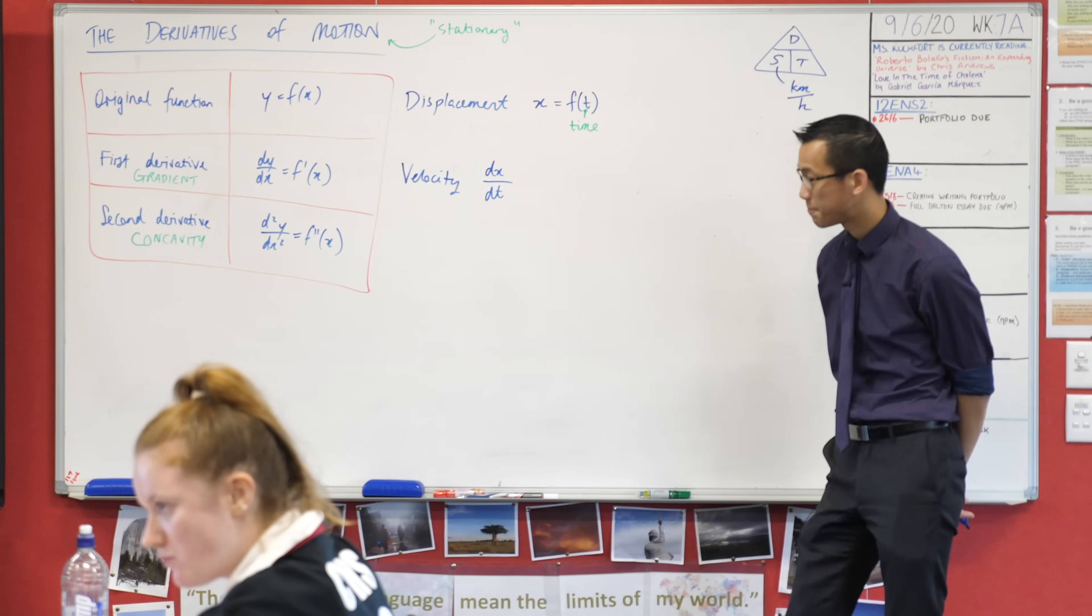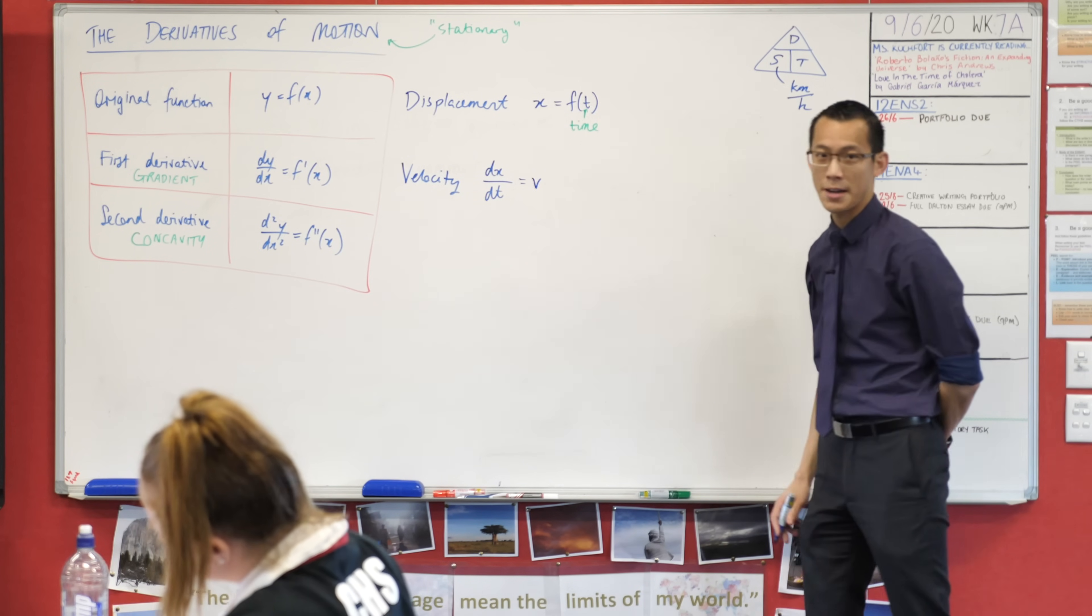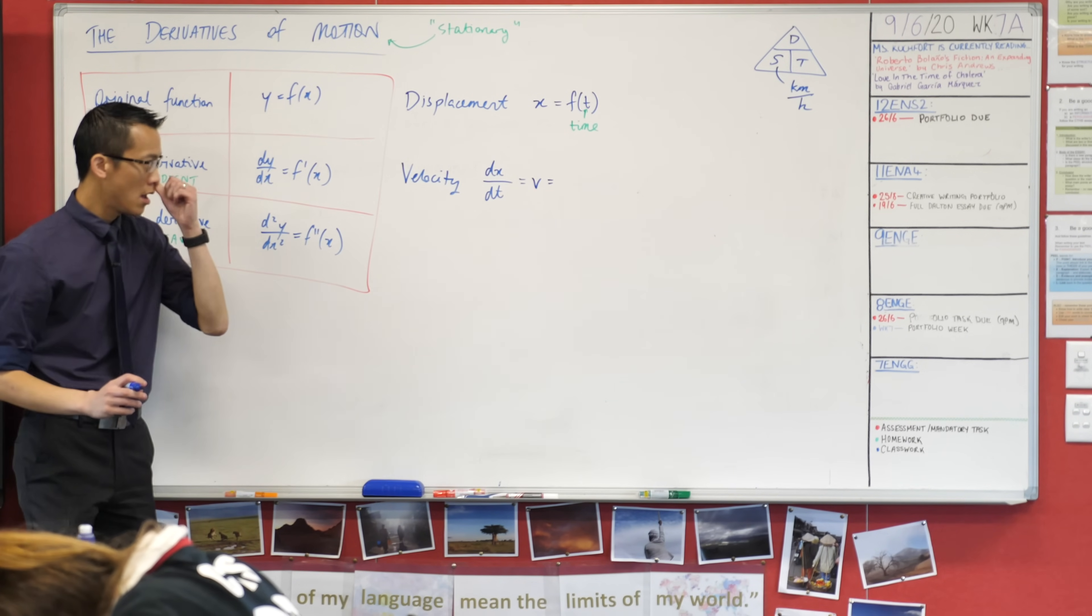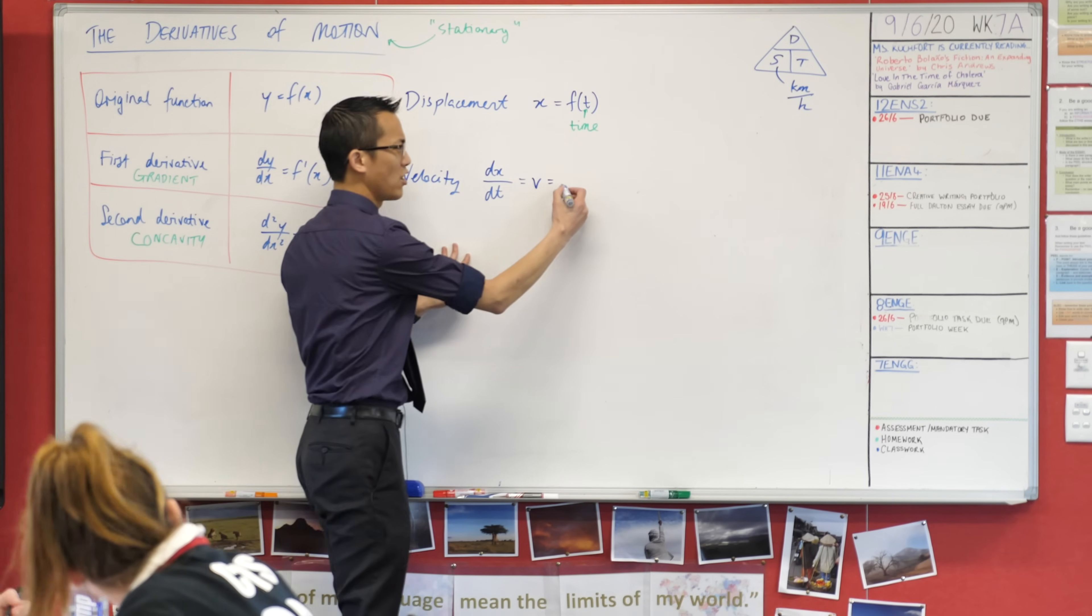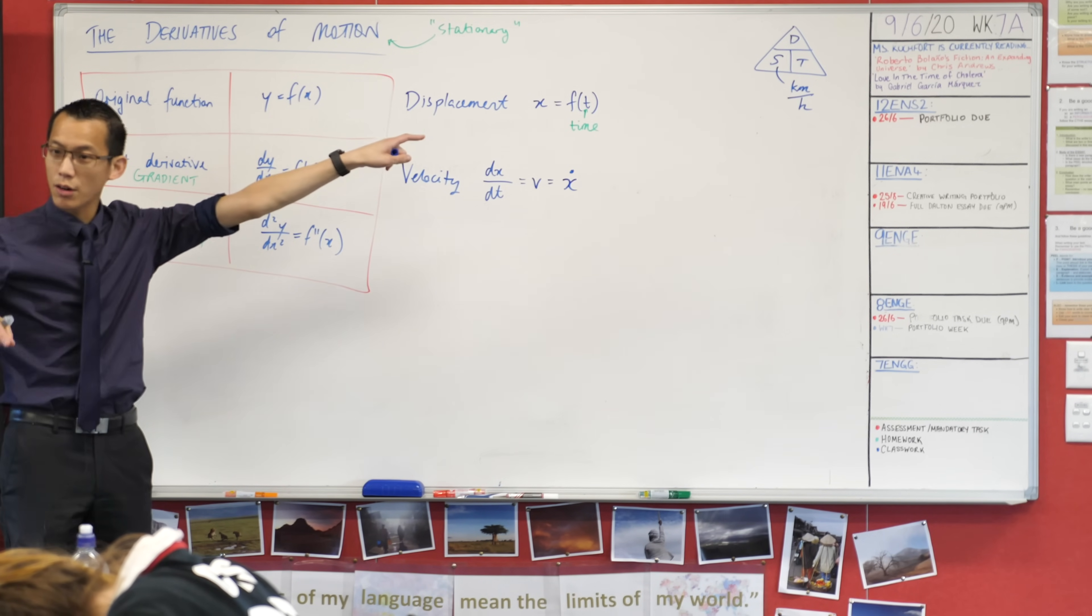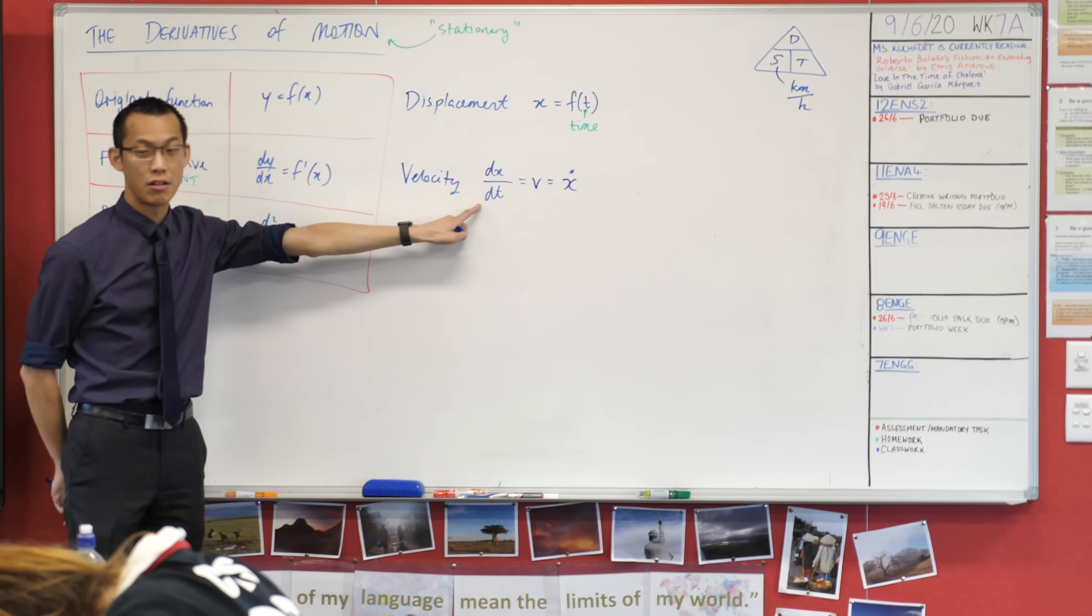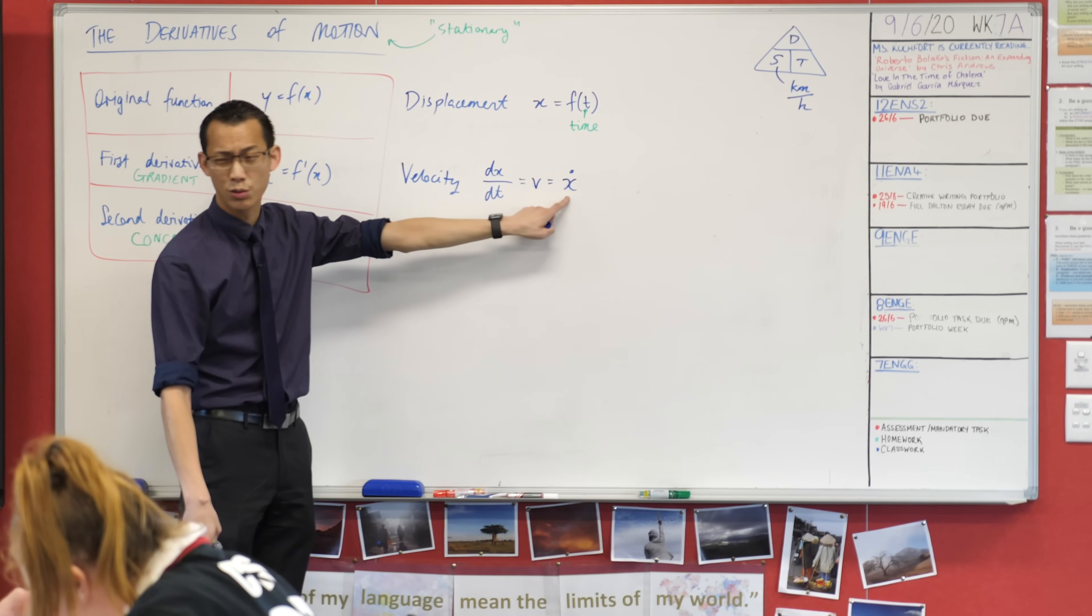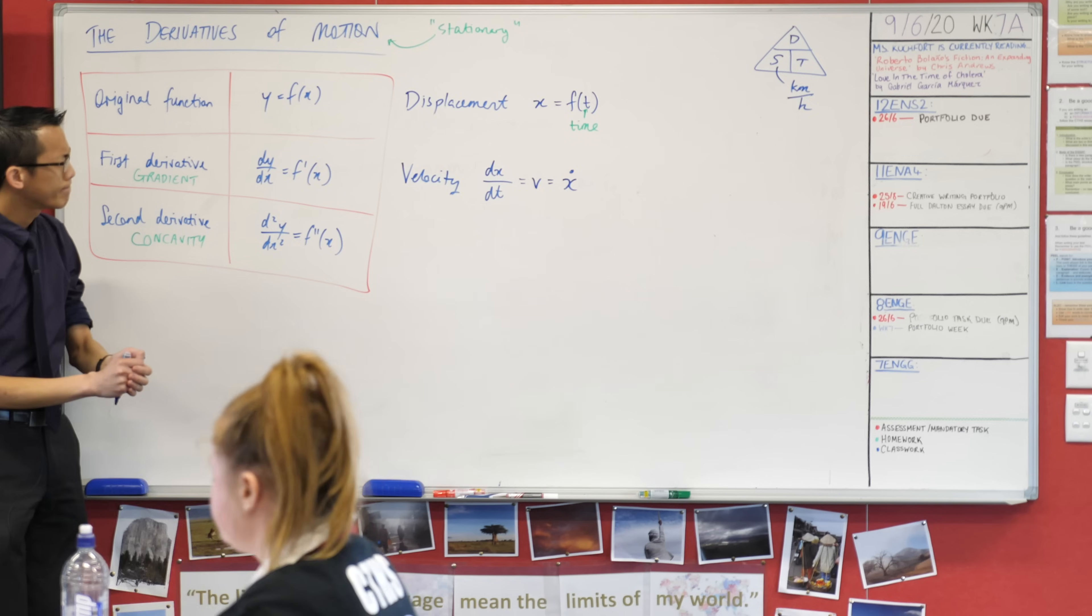dx on dt is sometimes just denoted with a v for velocity. When you are differentiating with respect to time, because this happens so frequently it gets its own notation. Instead of using a dash, we use a dot right over the top, right in the center. So velocity is how displacement is changing over time: dx on dt. Sometimes questions will say work out v for me, and they assume you know that means velocity. You'll also see this notation which means differentiate x once with respect to time.